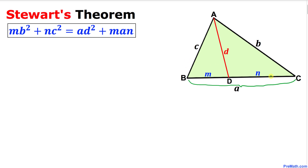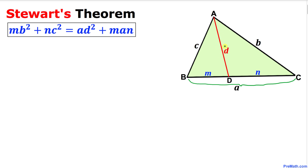We have triangle ABC where lowercase a is the side length opposite to vertex A, lowercase b is opposite to vertex B, and lowercase c is opposite to vertex C. Line segment AD has length d and divides side BC into two parts: the first part has length m and the second part has length n.